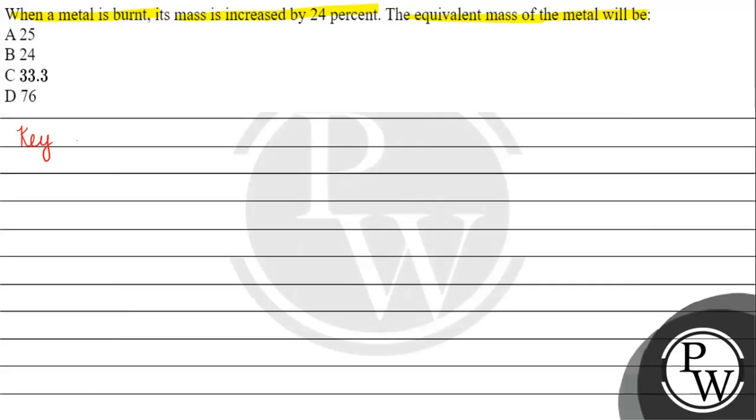The key concept for this question is: if we have metal M and oxygen O2, they form metal oxide MO2. Suppose the metal has a mass of x grams.